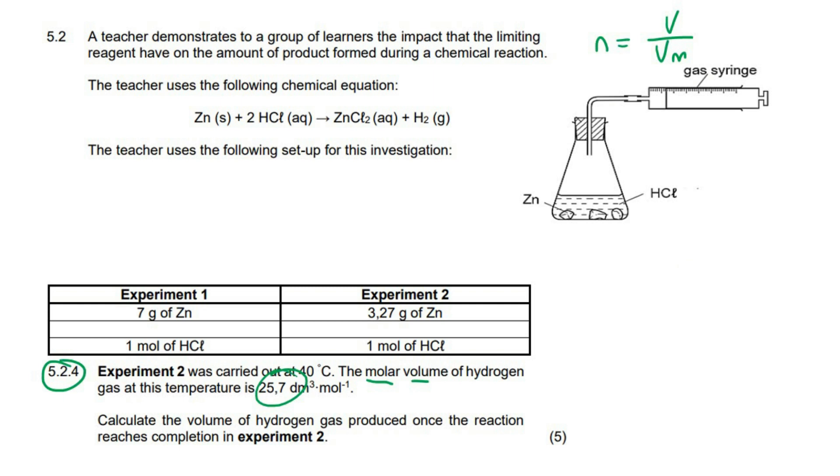So it says calculate the volume of hydrogen gas, which is this, produced once the reaction reaches completion. Very easy question. We know how much zinc we used. So we can work out the moles of zinc over there. Then we can simply use the mole ratio from zinc to hydrogen to get the moles of hydrogen, which would be this number over here. So then we would have this number, and we would have this number, and then we can easily get that number.